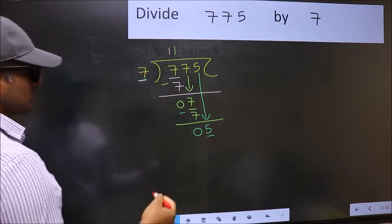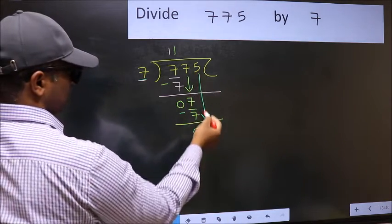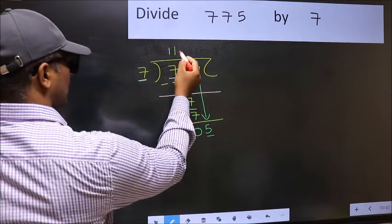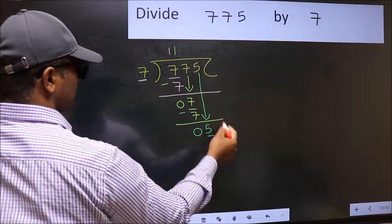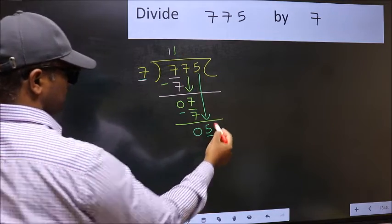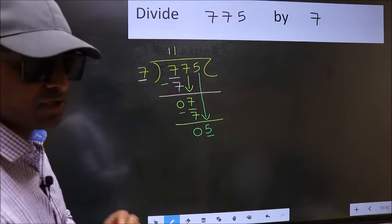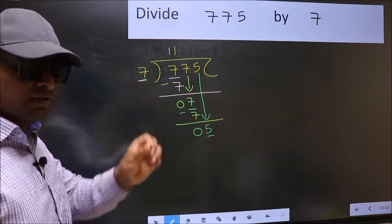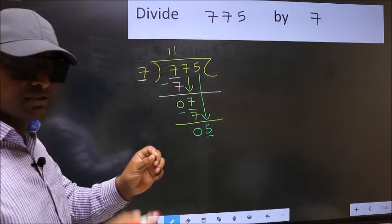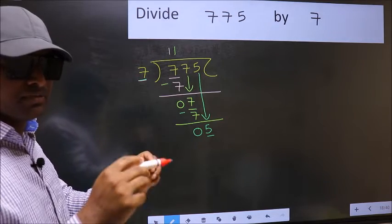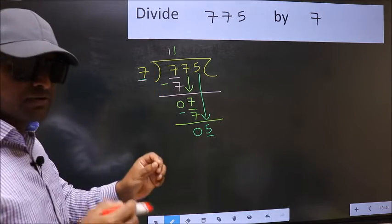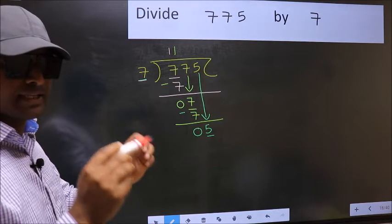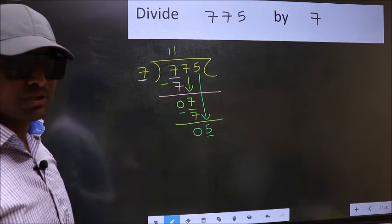Because just now you brought this number down, and in the same step you want to put a dot and take 0, which is wrong. I repeat: bringing the number down and putting a dot and taking 0, both at the same step, you should not do.